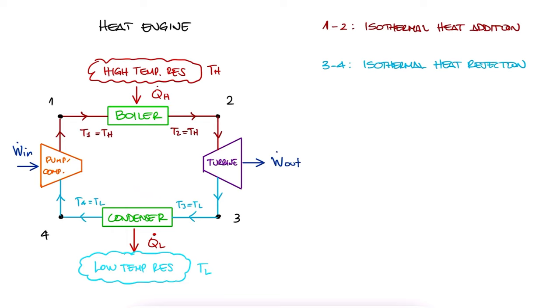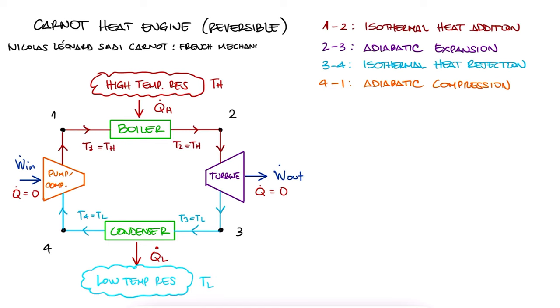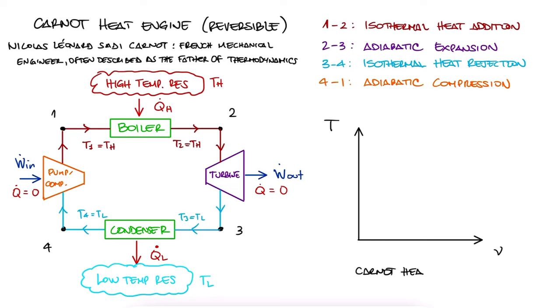And since we don't want to lose any heat to the surroundings while producing work at the turbine, and we don't want part of the work that we put into the pump or compressor to be lost as heat, both the expansion and the compression have to be adiabatic. When we meet all of these four conditions, this is what we call a reversible heat engine, which is also called a Carnot heat engine. Of course, because it was Carnot that established this maximum efficiency concept.